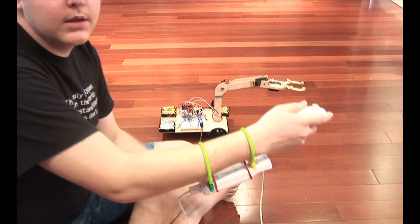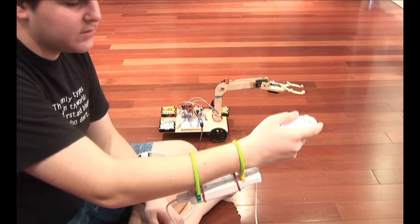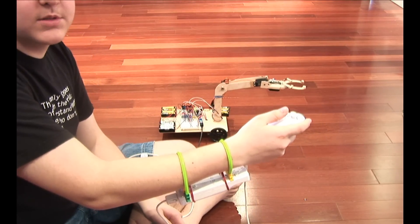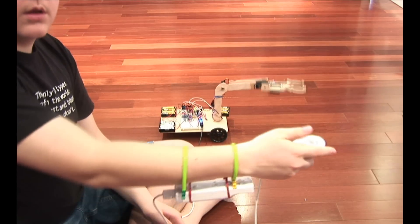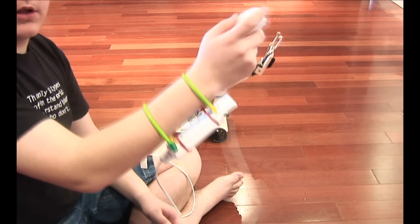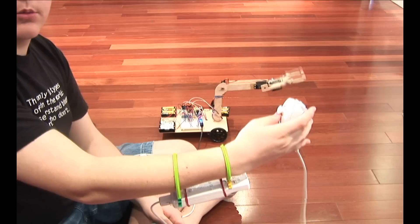Now you see, this Wii Remote and nunchuck happens to be strapped to my arm and the nunchuck is held in my hand. The arm of the robot follows the nunchuck and Wii Remote.